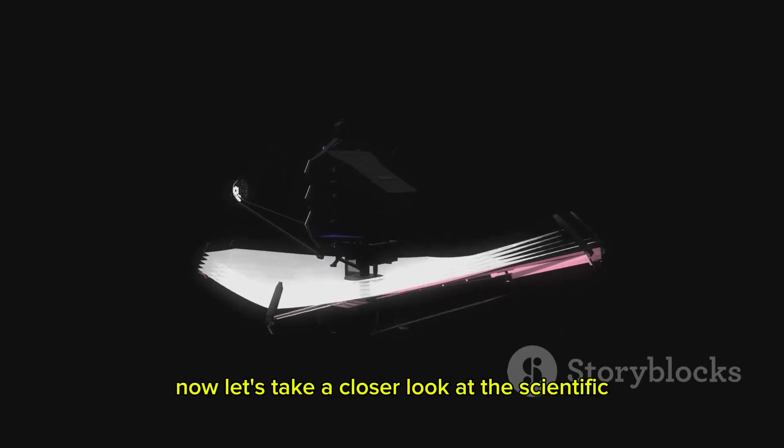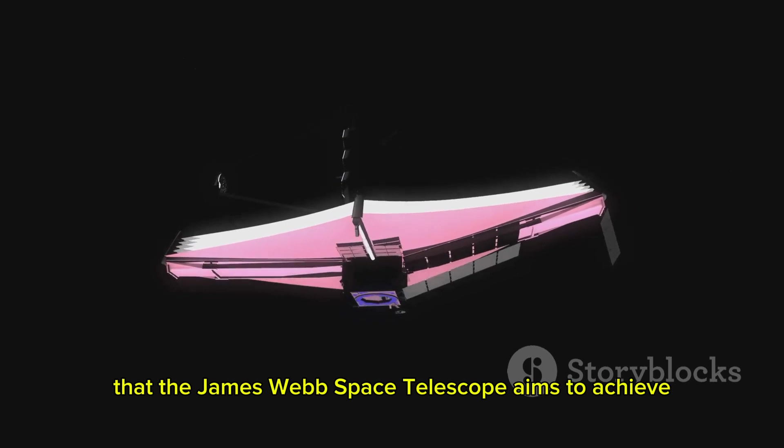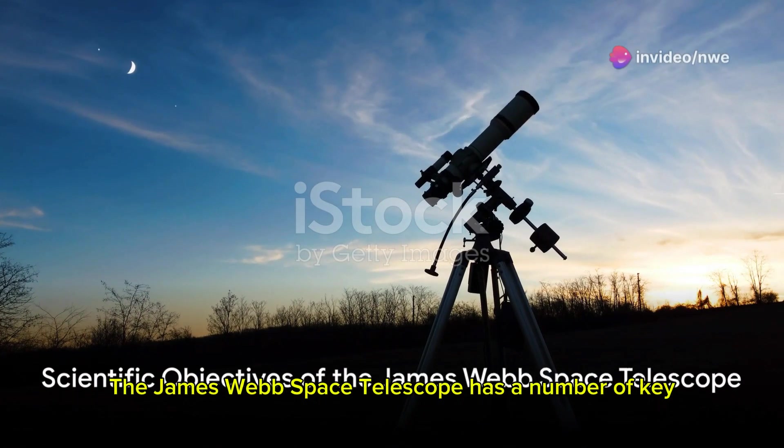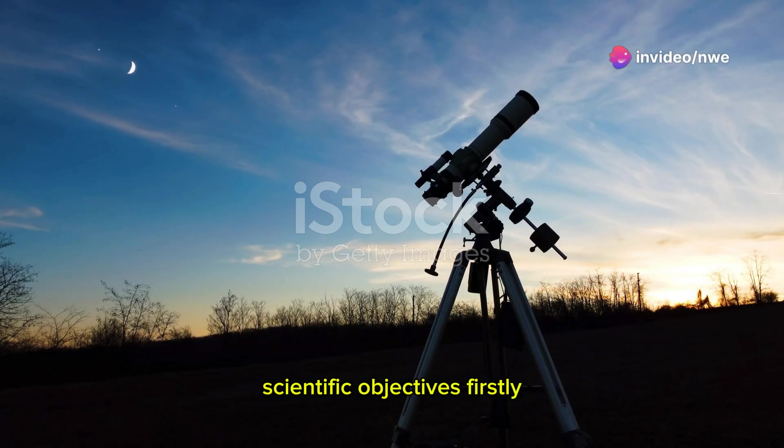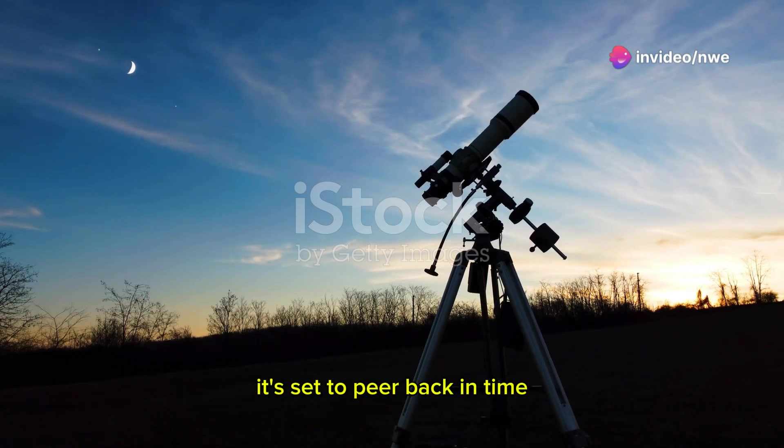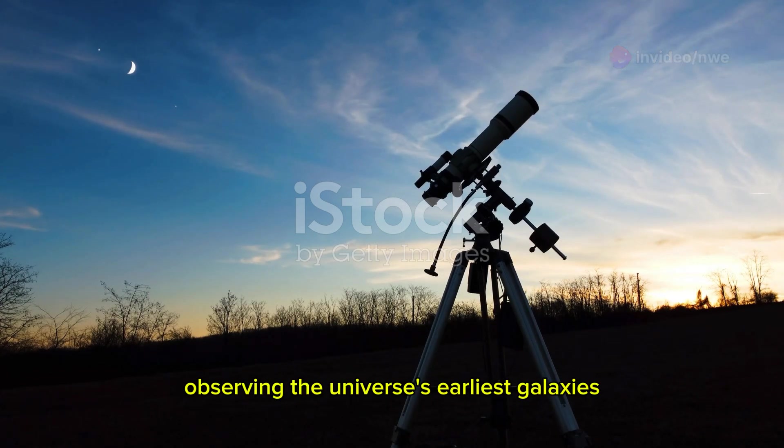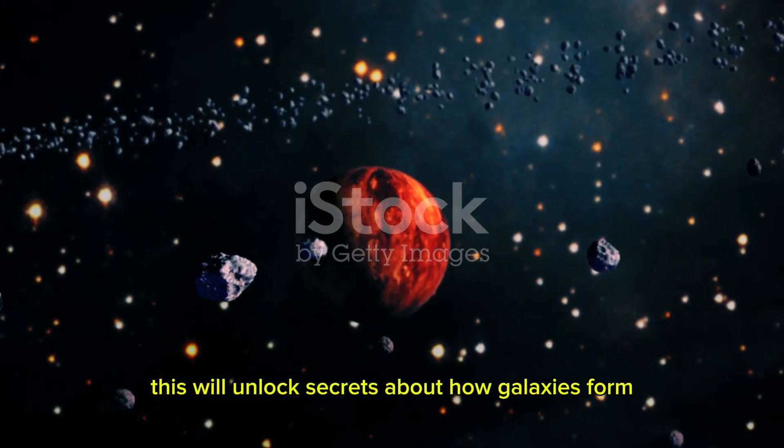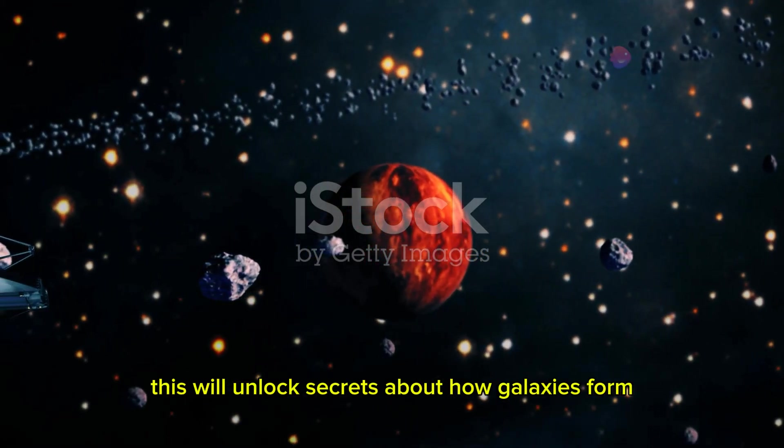Let's take a closer look at the scientific objectives that the James Webb Space Telescope aims to achieve. The James Webb Space Telescope has a number of key scientific objectives. First, it's set to peer back in time, observing the universe's earliest galaxies to help us understand cosmic history and evolution. This will unlock secrets about how galaxies form and evolve, potentially revolutionizing our understanding of the universe's origins.